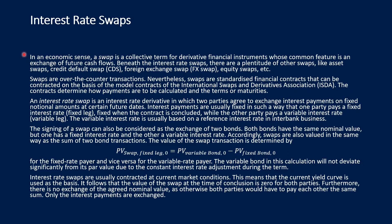Let us now turn to interest rate swaps. In an economic sense, a swap is a collective term for a derivative financial instrument whose common feature is an exchange of future cash flows. Besides the interest rate swap, there are a plentitude of other swaps, like asset swaps, credit default swaps, foreign exchange swaps, equity swaps, and so forth. Swaps are also over-the-counter transactions. Nevertheless, swaps are standardized financial contracts that can be contracted on the basis of model contracts of the International Swaps and Derivatives Association (ISDA). The contracts determine how payments are to be calculated and the terms of maturities.